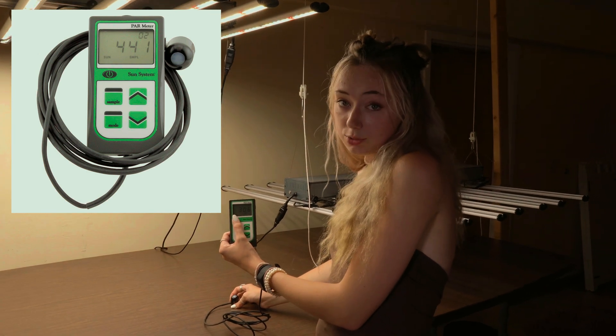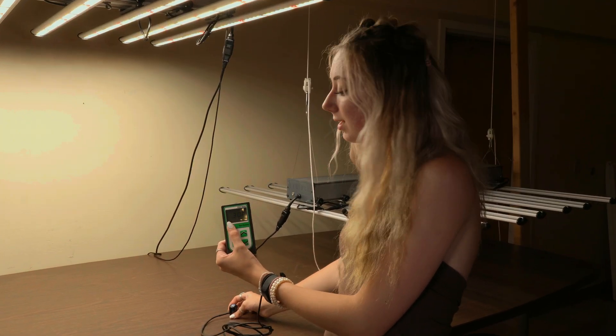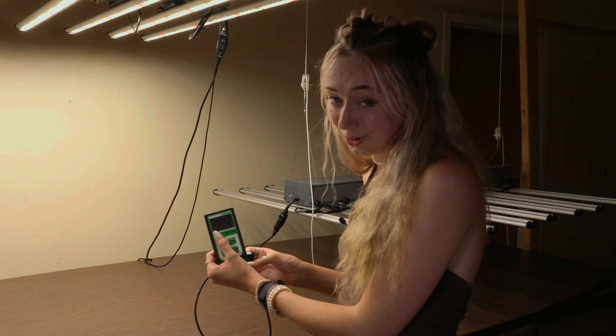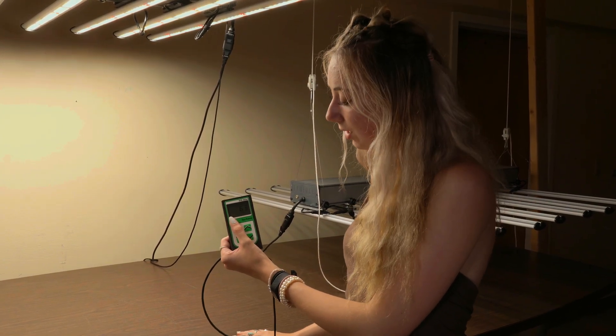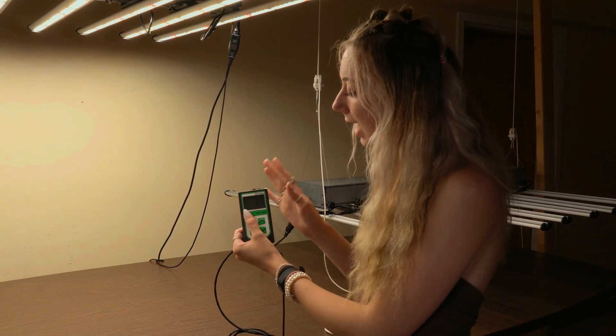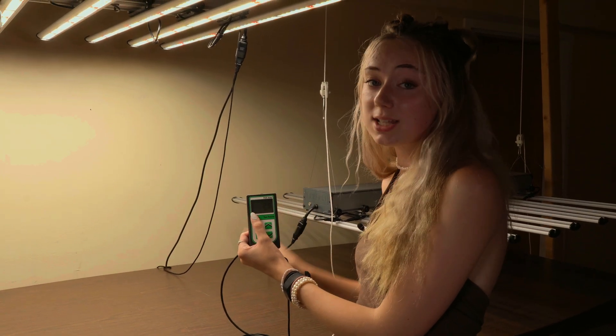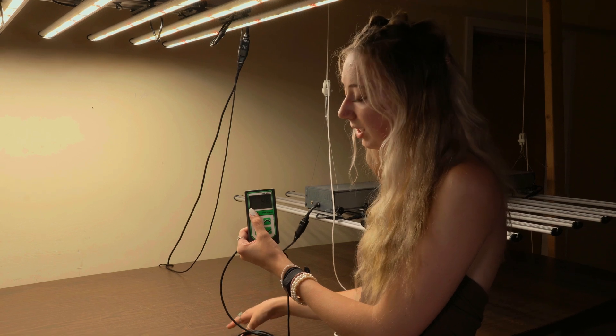But in our case, we're using clones from outside. And outside, of course, the light intensity is much stronger. So in certain cases like this, it wouldn't necessarily matter that it's higher, but it is good to have a PAR meter so that you can know just how much light your plants are absorbing.